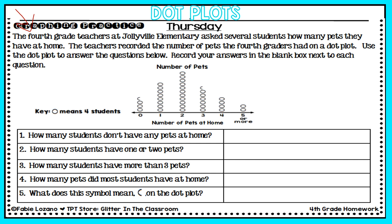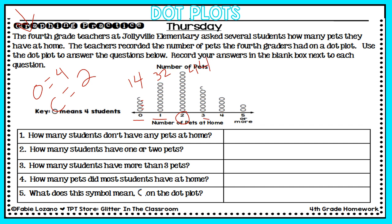Let's label this graph before we even get started with the questions. The circles represent four students each, so the number of students with zero pets is four, eight, twelve — and I see half a circle. If one whole circle equals four students, then half a circle must equal two. So the number of students with zero pets is fourteen. One pet is 32, two pets is 44, three pets is 26, four pets is 16, and five or more pets is eight students.